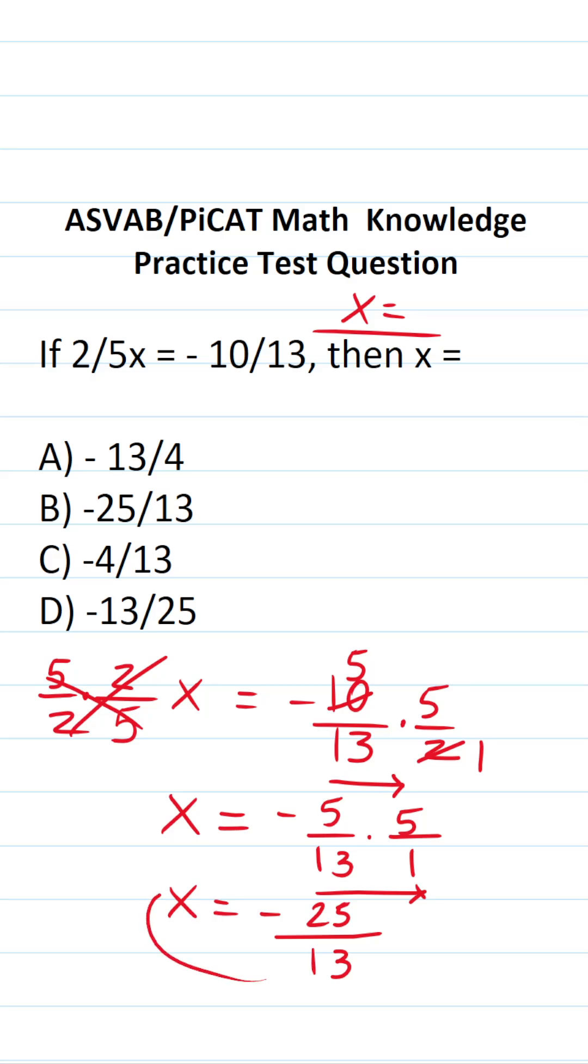13 is a prime number, so we can't reduce this any further. The answer to this one is b, negative 25 over 13.